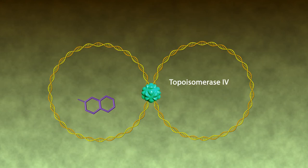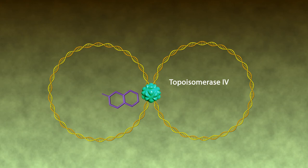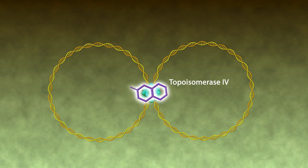Another major target of fluoroquinolones is topoisomerase IV, mainly gram-positive, which nicks and separates daughter DNA strands after DNA replication.